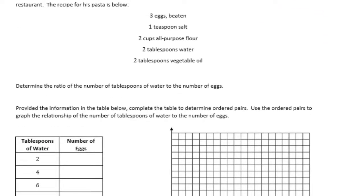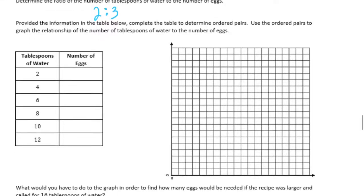Exercise 6: Also on the news broadcast, a chef from a local Italian restaurant demonstrated how he makes fresh pasta daily. The recipe is: 3 eggs beaten, 1 teaspoon of salt, 2 cups of all-purpose flour, 2 tablespoons of water, and 2 tablespoons of vegetable oil. Determine the ratio of the number of tablespoons of water to the number of eggs. We want a ratio of water to eggs: water is 2 tablespoons, eggs is 3 — so the ratio is 2 to 3. Complete the table to determine ordered pairs and use them to graph the relationship.